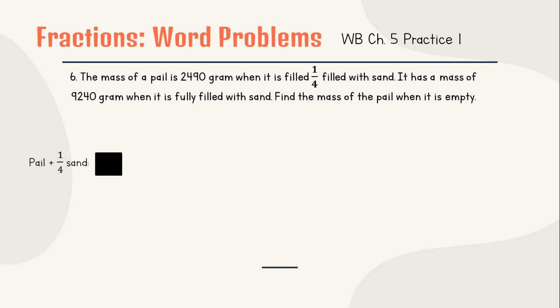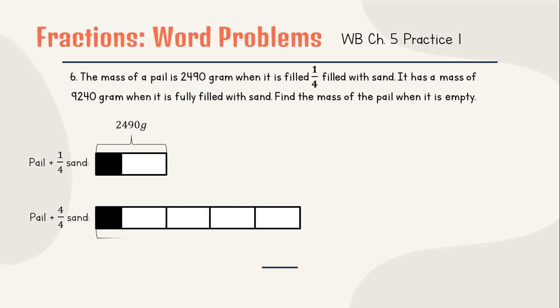For example, that black box is the mass of the pail. And this is 1/4 filled with sand. So for all of this, pail with 1 quarter sand is 2,490 grams. And we have another information that a pail with 4/4 sand, which is fully filled, will be 9,240 grams. Of course, the mass of the pail will be the same - it can't be different weights when filled. What's different is the weight of the sand.